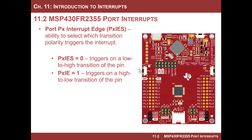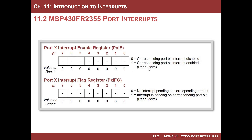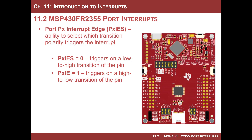Here is an interesting thing: you can trigger an interrupt on a port when there's an input transition, but you also have the ability to tell it which transition will cause it. There's a configuration register called the port interrupt edge select — PXIES. If a particular bit is zero, a low-to-high transition will cause the interrupt. If it's a one, a high-to-low transition will cause the interrupt. This lets you configure sensitivity for a particular switch — think about whether pressing the switch causes a low-to-high or high-to-low transition, then set the sensitivity accordingly.